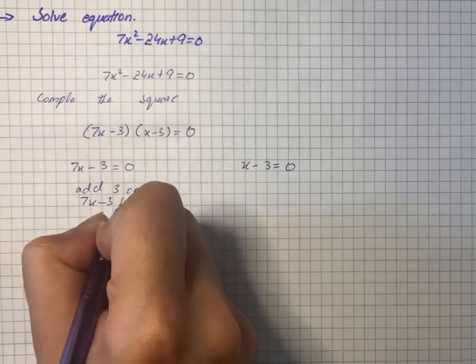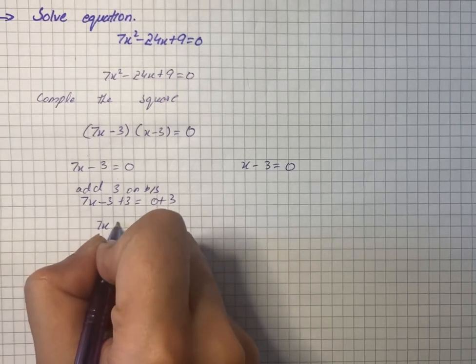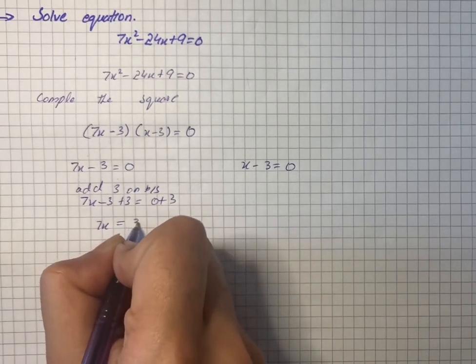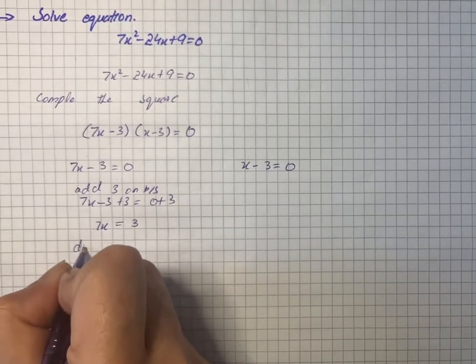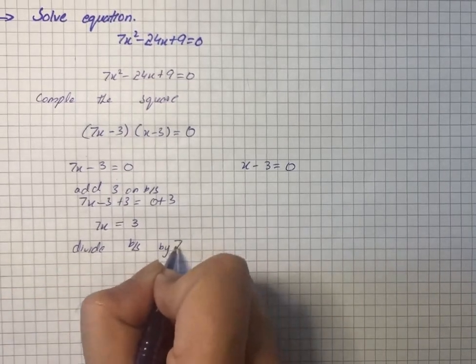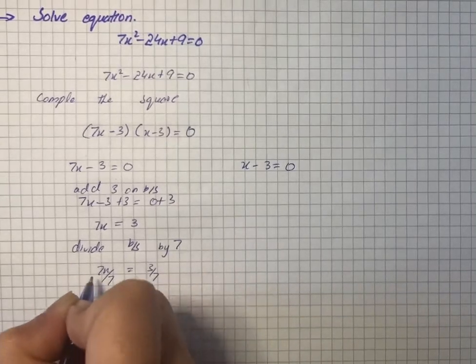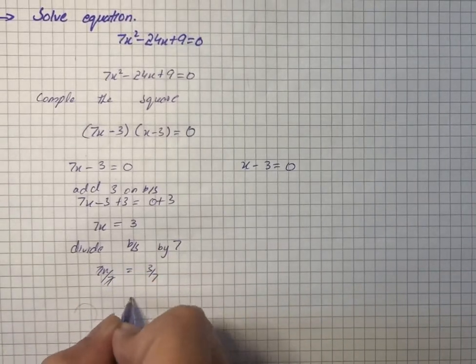We have -3 + 3 = 0 + 3, so 7x = 3. Then we will divide both sides by 7, so we have 7x/7 = 3/7, which gives us x